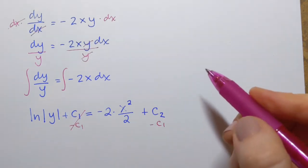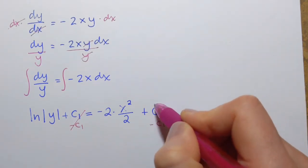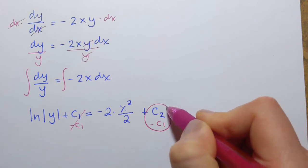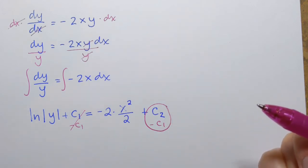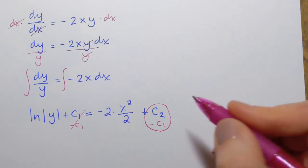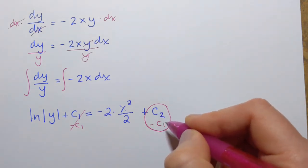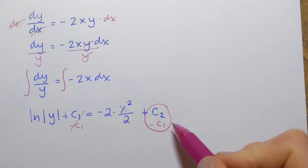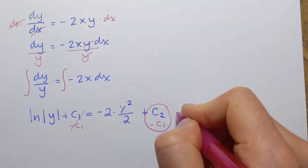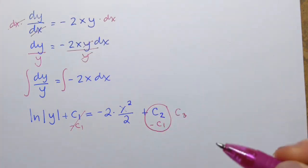And what I'll have on the right hand side, I'll have two constants being subtracted. So, I know that when I subtract two constants, I will end up with a constant. So, I'll just rename the result and I will call that a constant c3.